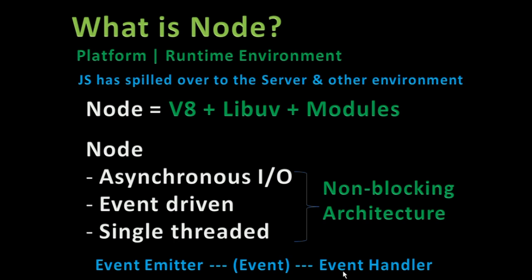Before Node came along, JavaScript had always been used within the browser — to talk to the DOM, do DOM manipulation, and perform client-side programming. But JavaScript has spilled over to the server and other environments, because JavaScript can now be executed outside the browser. That is what Node has made possible. Now you can build desktop applications, mobile applications, embedded systems, network applications, and CLI tools with JavaScript, and that is what Node has done for us.